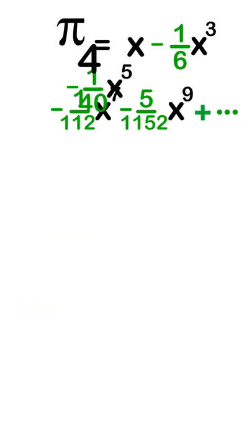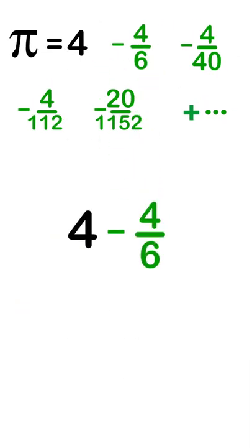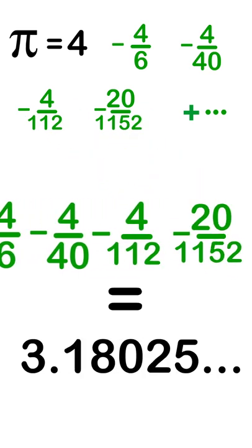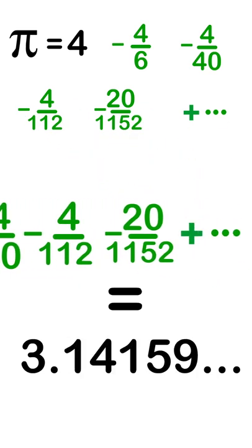When we simplify and solve for pi, we can calculate pi using the terms from the binomial expansion. The more terms we calculate, the closer we get to pi.